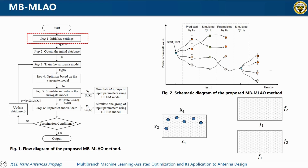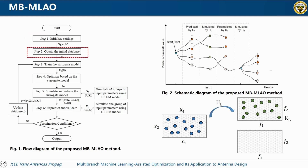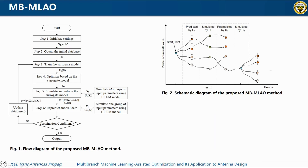Step one: initialize settings. X sub L means the low fidelity input parameter vector sampled by Latin hypercube sampling. Step two: get initial database — calculate X sub L by a low fidelity electromagnetic simulation and X sub H by a high fidelity electromagnetic simulation. Step three: train surrogate model — use multi-fidelity Gaussian process regression to learn the relationship between the input parameters and the response.